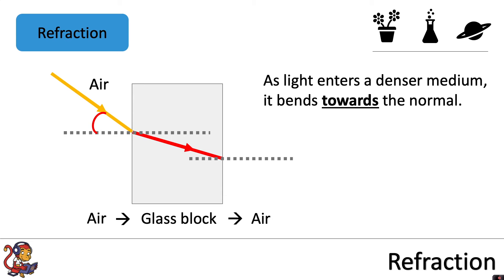As light enters a denser medium, it bends towards the normal. So a glass block is more dense than air. If you were to measure the angles then, let's say this was for example coming in at around 45 degrees, as it bends towards the normal, this angle will be smaller, say 35 degrees for example.